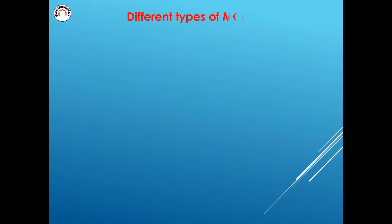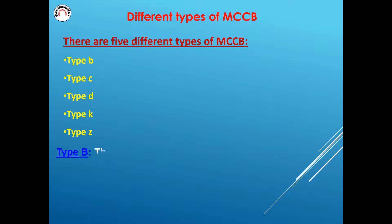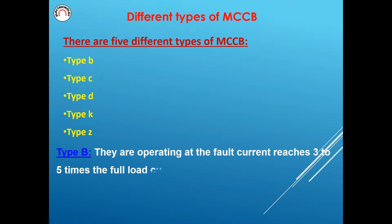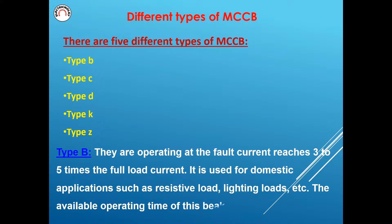Different Types of MCCB. There are five different types of MCCB: Type B, Type C, Type D, Type K, and Type Z. Type B operates when the fault current reaches three to five times the full load current. It is used for domestic applications such as resistive loads, lighting loads, etc. The available operating time of this breaker is 0.04 to 15 seconds.